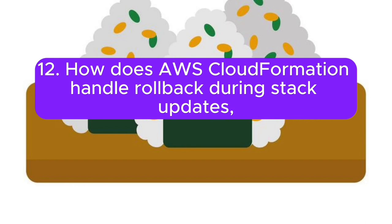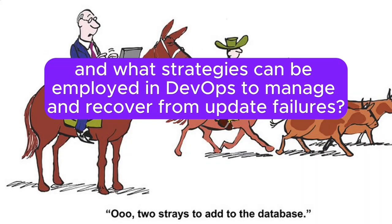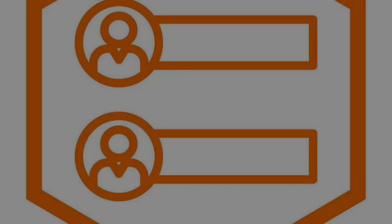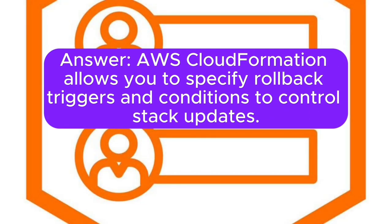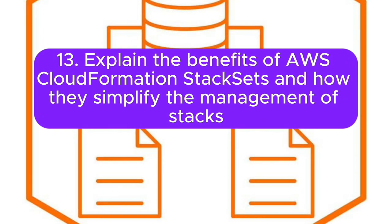Question 12: How does AWS CloudFormation handle rollback during stack updates, and what strategies can be employed in DevOps to manage and recover from update failures? Answer: AWS CloudFormation allows you to specify rollback triggers and conditions to control stack updates. DevOps strategies include extensive testing, using change sets, and implementing automated rollback processes.